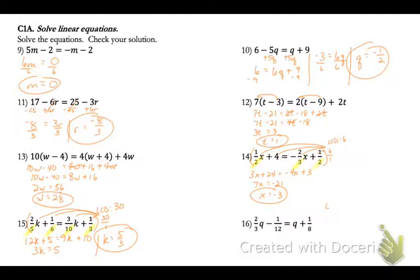Now in number 16, I'm going to look at my denominators 3, 12, and 8. And then my common denominator can be 24. So I multiply by 24 over 1. So 24 times 2 thirds is 16q. And then minus 24 times the 12th is 2 equals 24q plus 3. And now I just combine. So I get negative 5 equals 8q, or q equals negative 5 eighths.